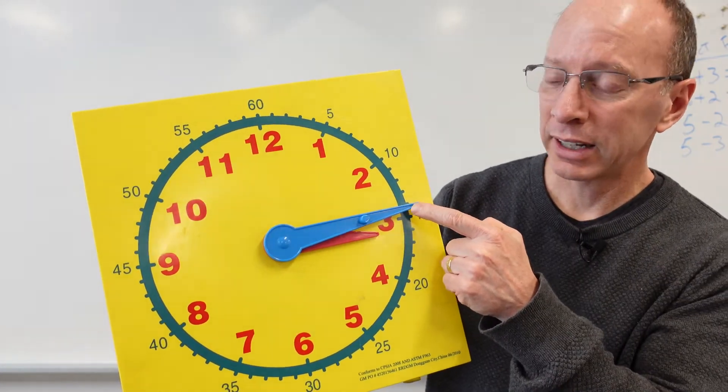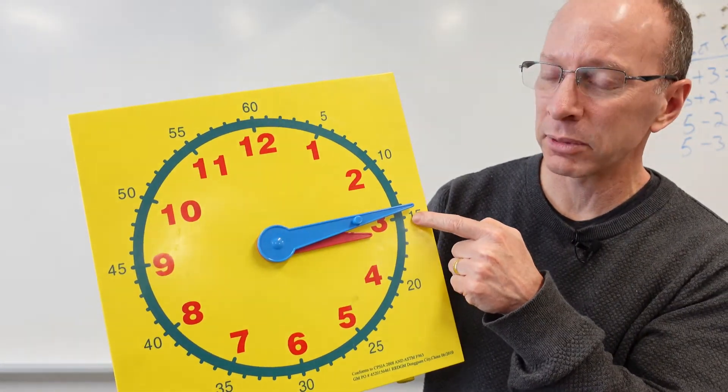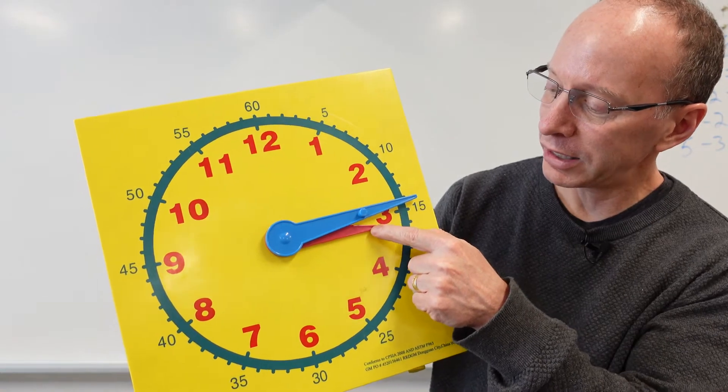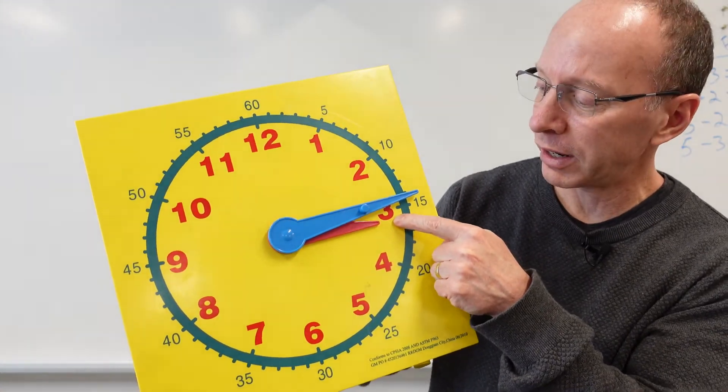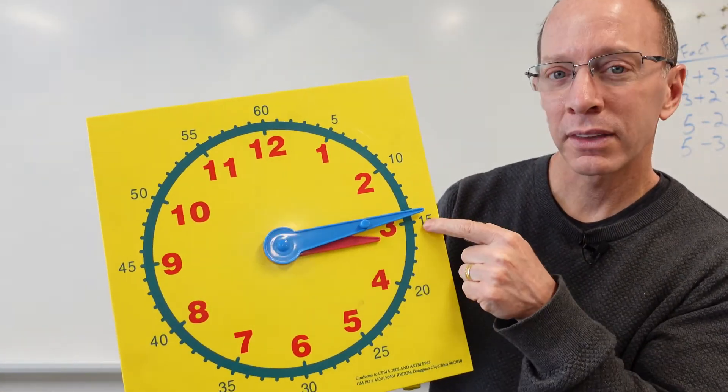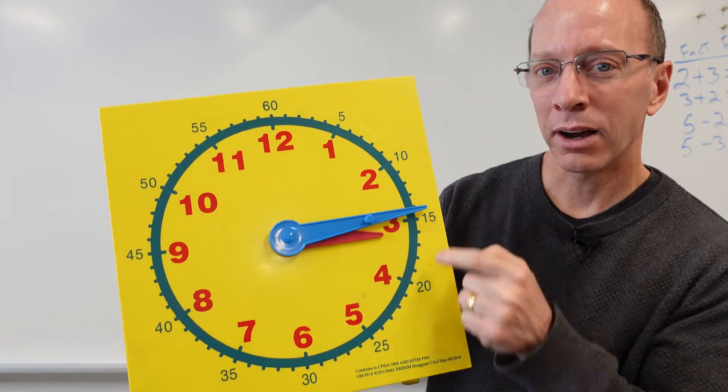Can you see what that one is? Remember, the man hand, it's on the 3, so it's something 15, and the lady's hand just passed the 3, so it's 3:15. Excellent.